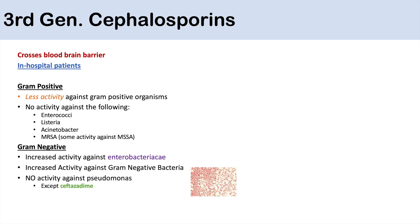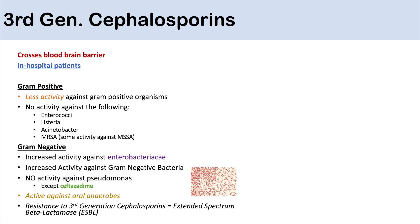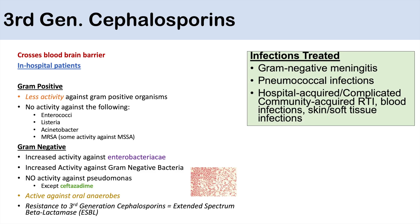Ceftazidime covers Pseudomonas, but the other third-generation cephalosporins do not. They are active against oral anaerobes like Bacteroides fragilis. Notably, bacteria resistant to third-generation cephalosporins are called ESBL (extended-spectrum beta-lactamase) bacteria. Infections treated include gram-negative meningitis, pneumococcal infections, and a wide variety of hospital-acquired and complicated community-acquired infections such as respiratory tract infections, blood infections, and skin and soft tissue infections. Ceftriaxone is used very frequently in hospital patients.